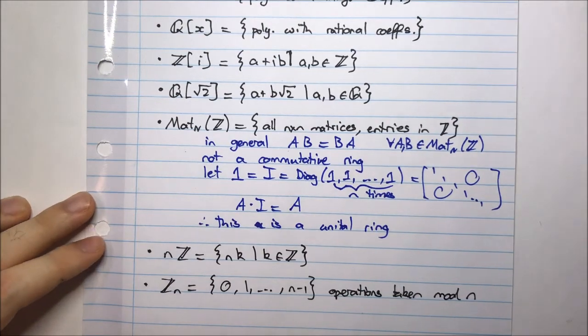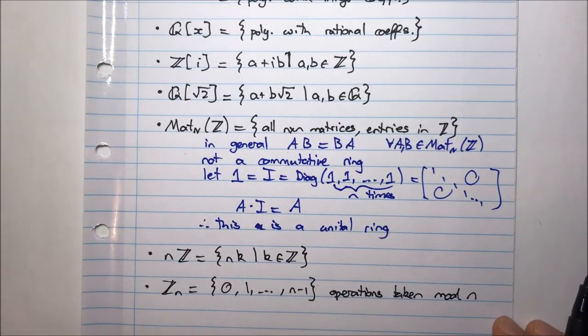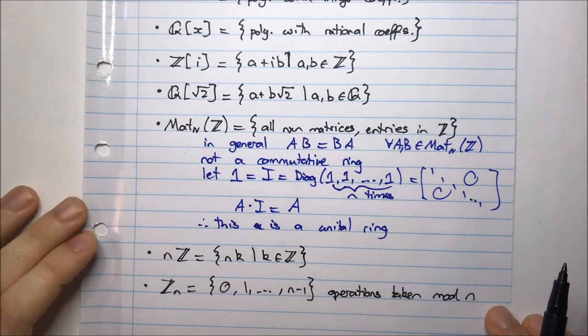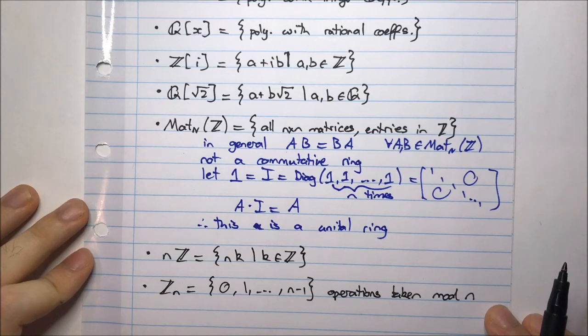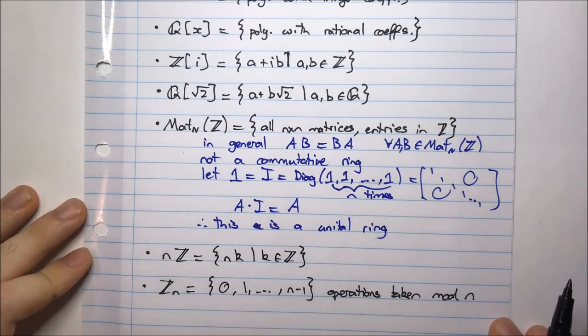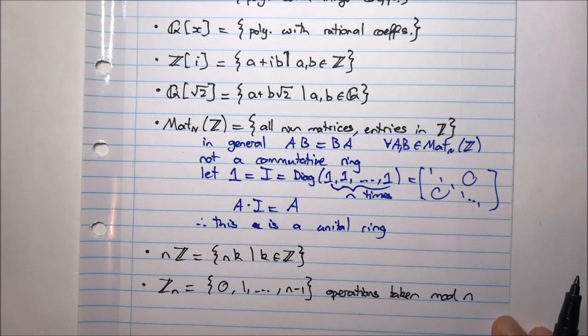So these are all examples of rings. You can check them for yourself using the definition — verify that all the conditions hold. Hope you enjoyed this video.